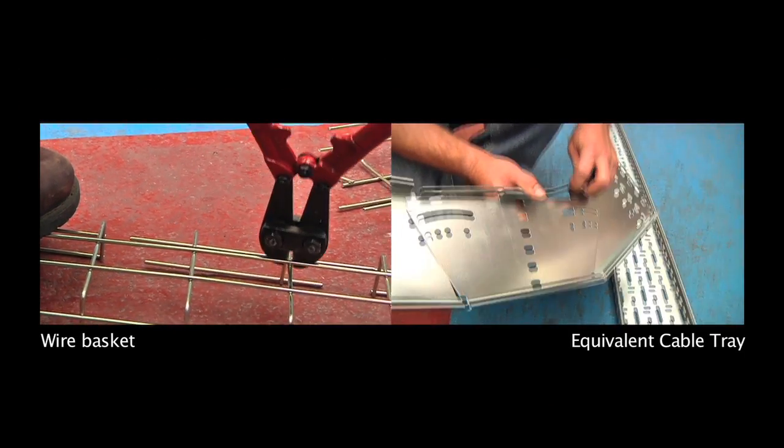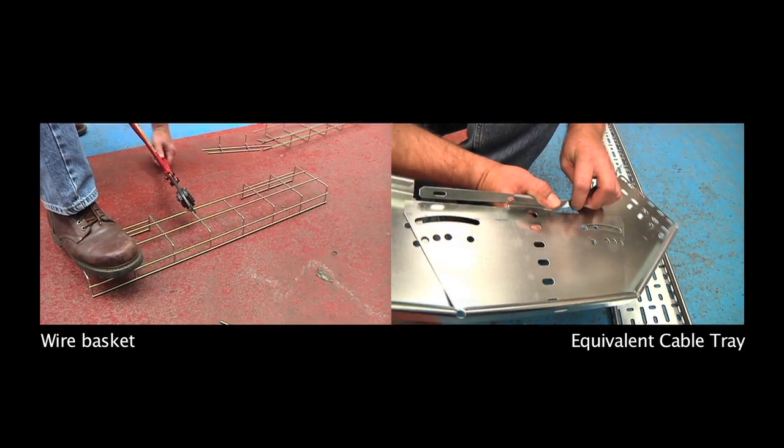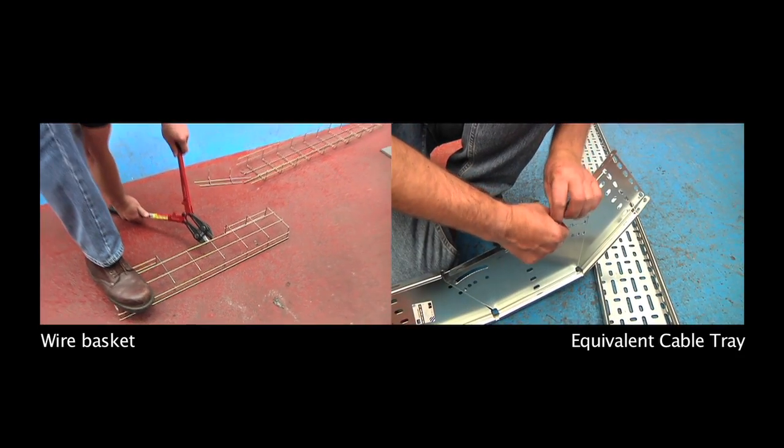Here we are simply cutting sections out to create the bend. As you can see it is far more complicated with a cable tray.